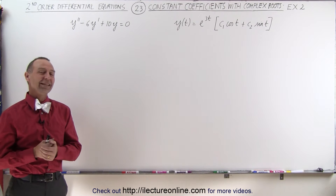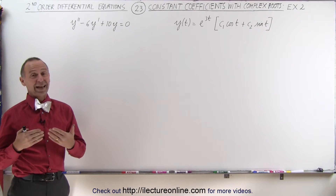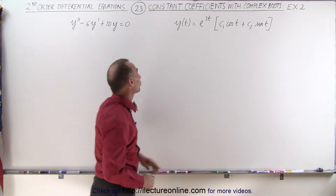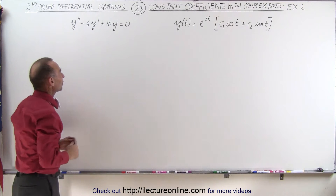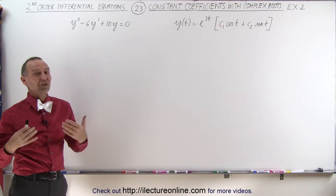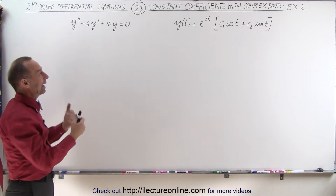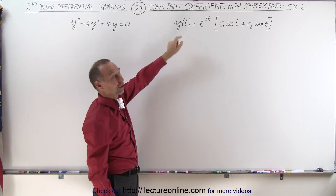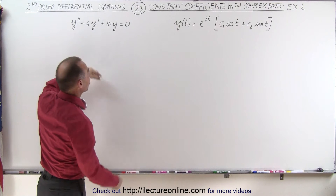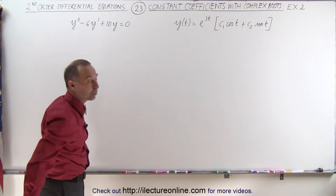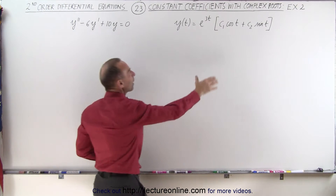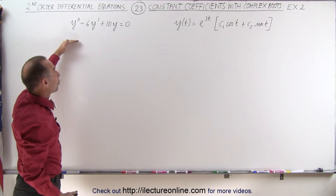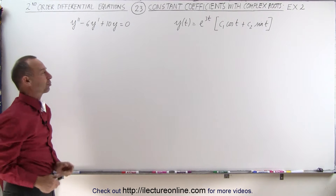Welcome to Electron Line. Just to show you that this actually does work — that this is indeed the correct equation or direct solution to this second order differential equation with constant coefficients that has complex roots — let's go ahead and work this out. We're going to find the first and second derivative of the general solution, plug it back into the original equation, and show that the left side does indeed equal zero, confirming that the characteristic equation gives us those complex roots.